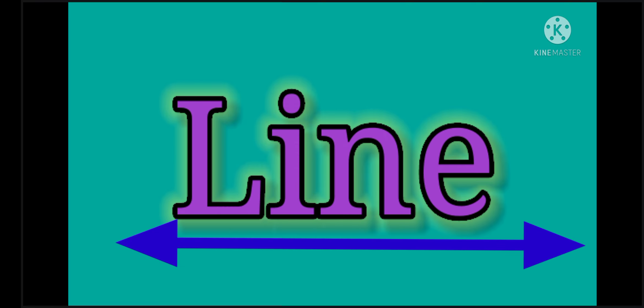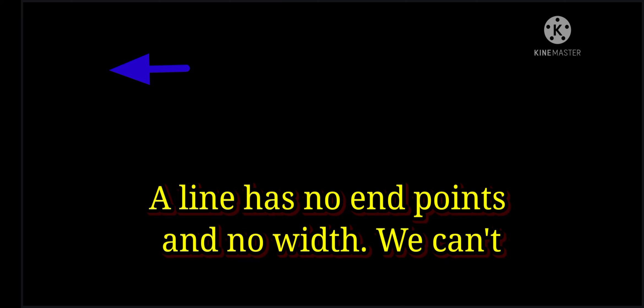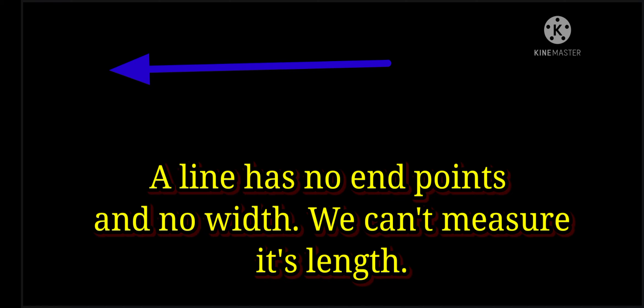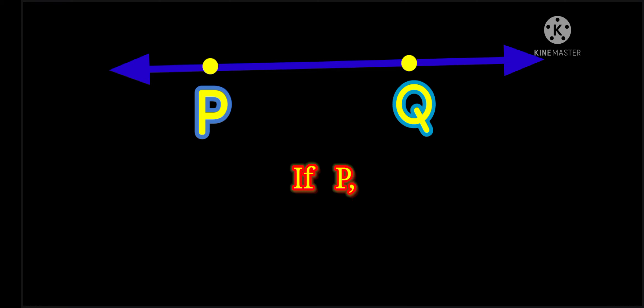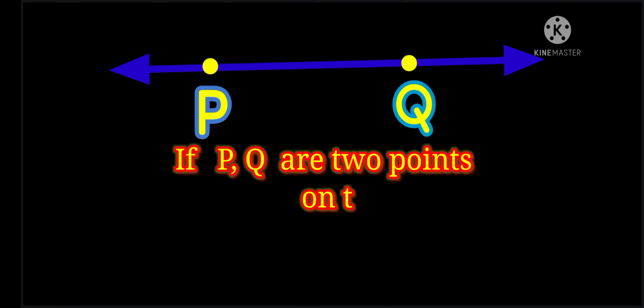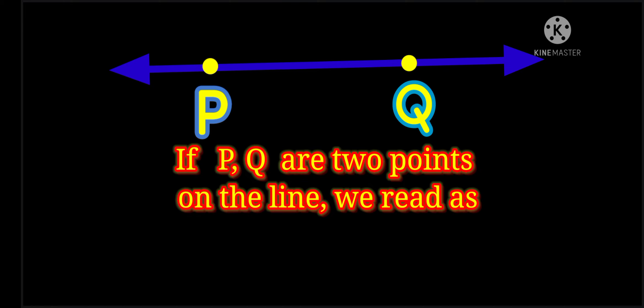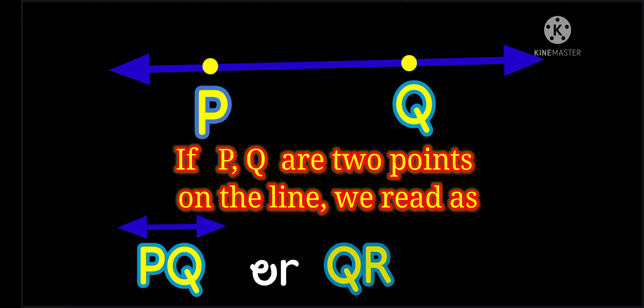Line. A line has no end points and no width. We cannot measure its length. Point P, point Q. If P, Q are two points on the line, we read it as P Q line or Q P line.